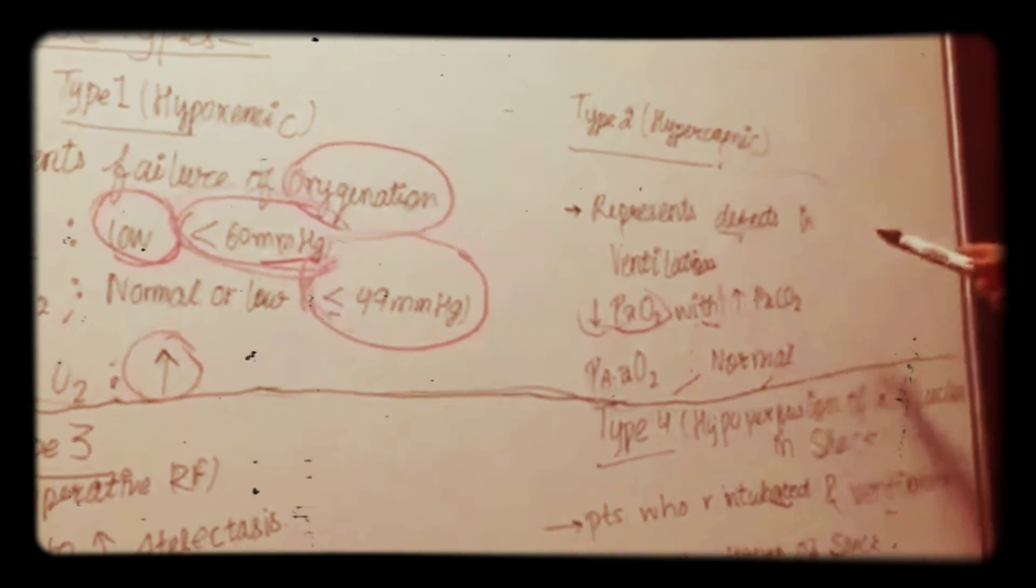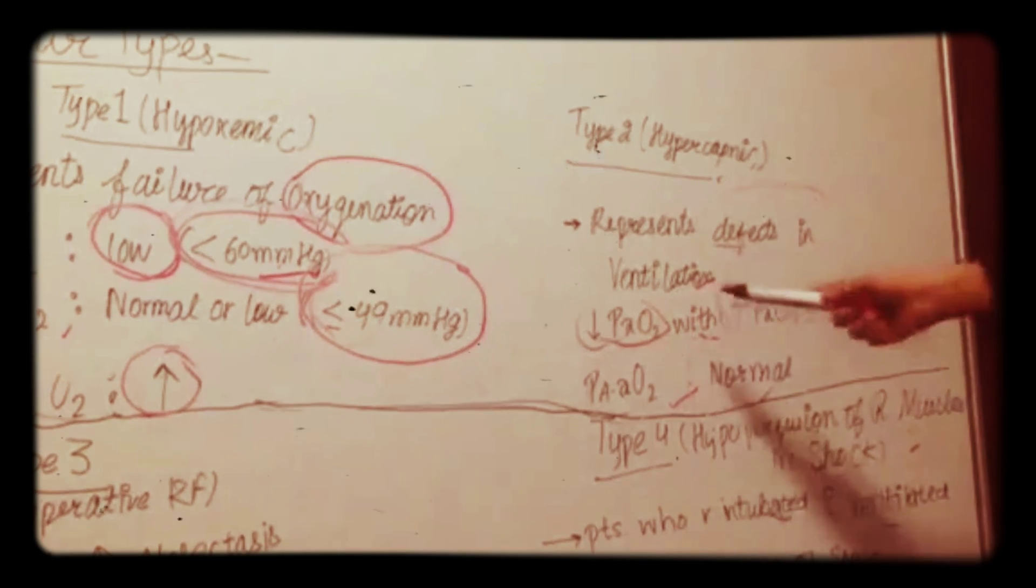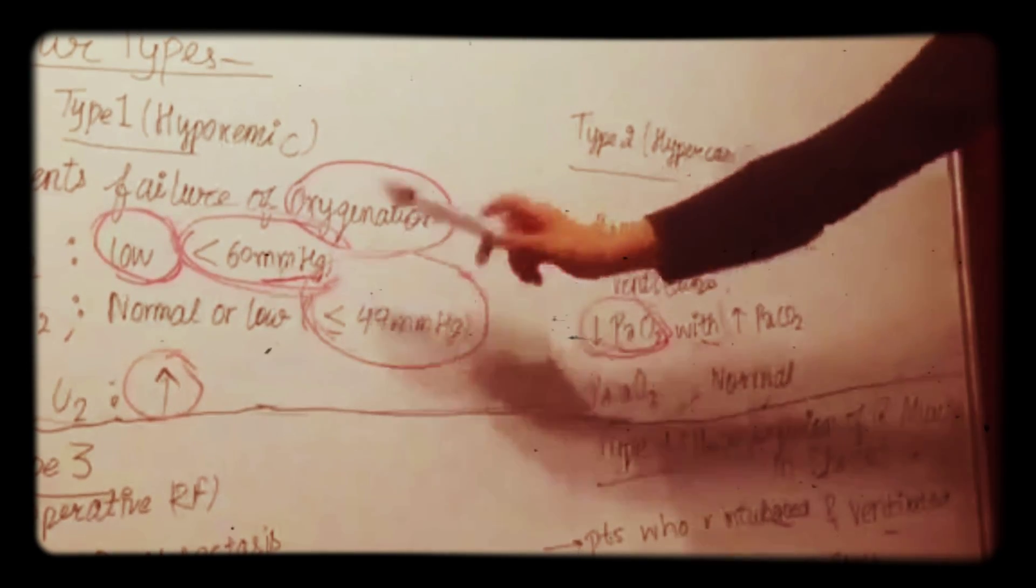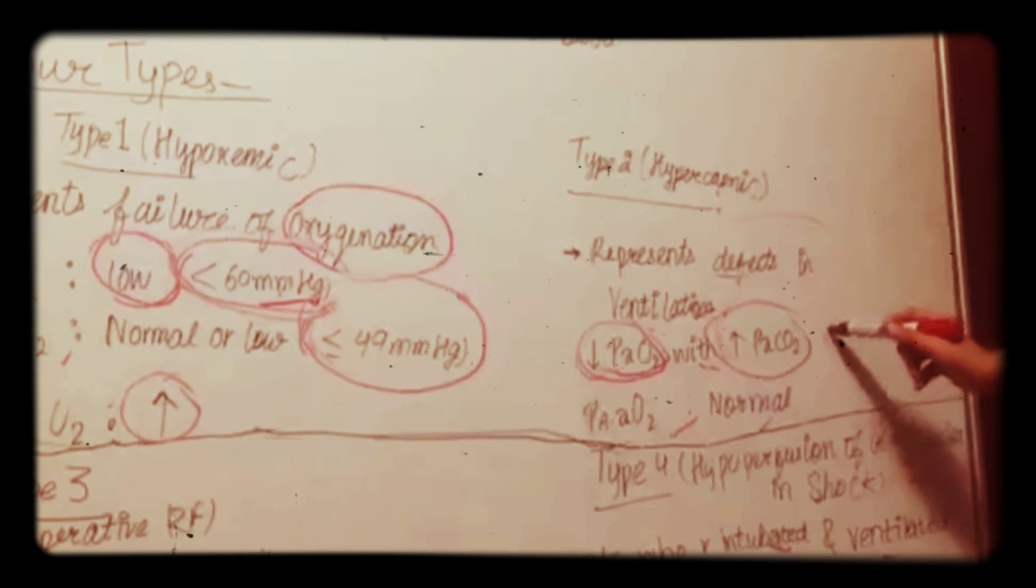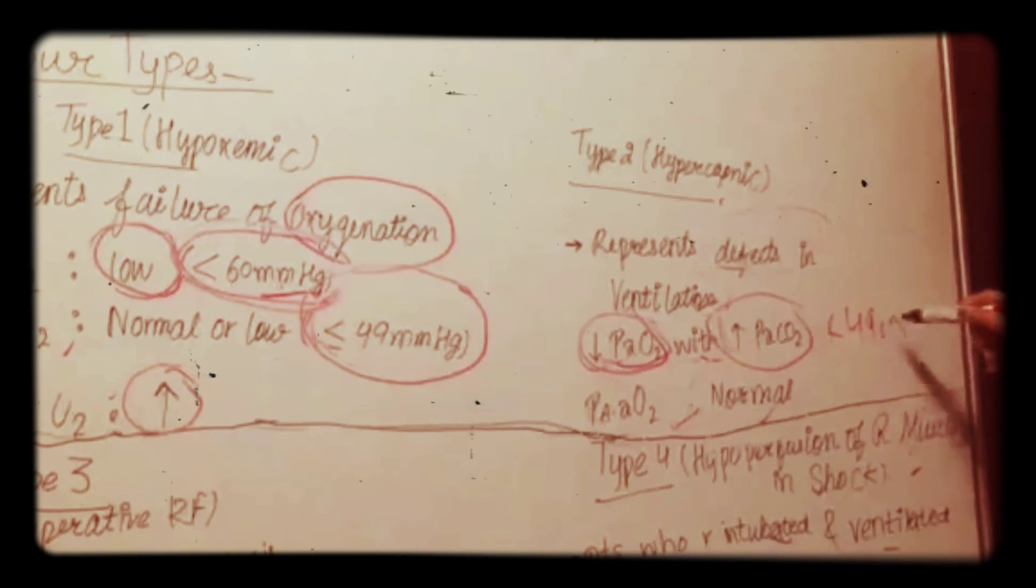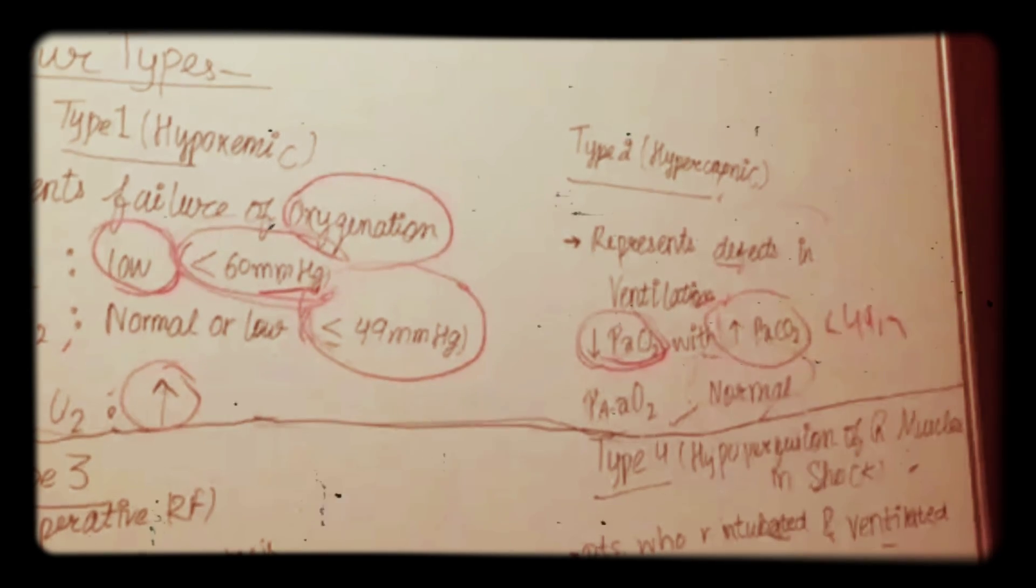Type 2 hypercapnic represents mainly defects in ventilation, in which decrease in PaO2 which is less than 60 mmHg and increase in PaCO2 which is more than 49 mmHg in which A-a gradient is normal.